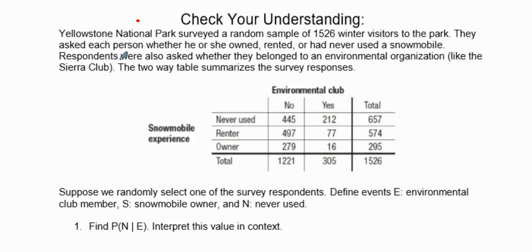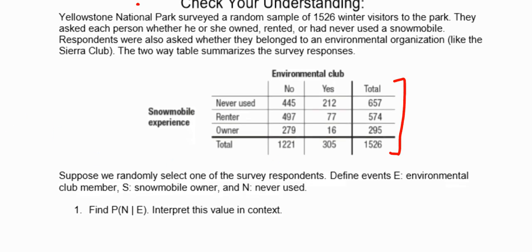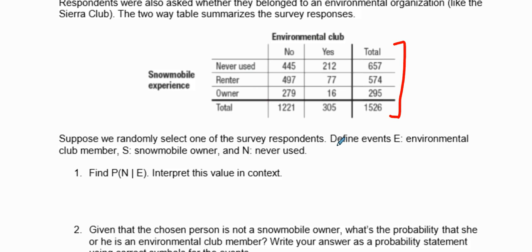Responses were also asked whether they belong to an environmental organization like the Sierra Club. The two-way table summarizes this data. Suppose we randomly select one of the survey respondents. Define events E, S, and N as given.